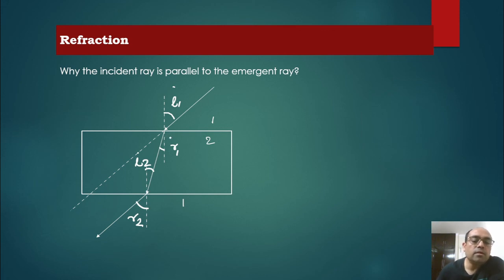So at this interface we can write that refractive index of 2 with respect to 1 is equal to sine i1 divided by sine r1. At this interface we can write that refractive index of 1 with respect to 2 is equal to sine i2 divided by sine r2.